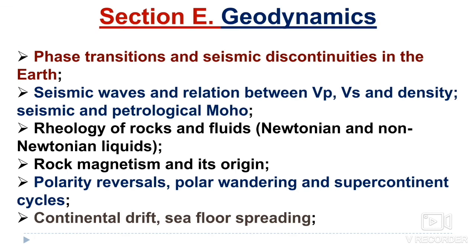Section E is geodynamics. You have to study phase transitions and seismic discontinuities in the earth, and the internal structure of the earth — which you also encounter in Paper 1 under physical geology, so cover it thoroughly considering physical and chemical properties. Seismic waves and the relationship between Vp, Vs, and density, and the seismic and petrological Moho are also important.